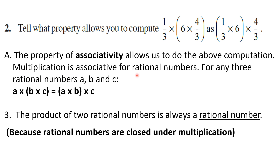Multiplication is associative for rational numbers. For any 3 rational numbers a, b and c, a into (b into c) is equal to (a into b) into c. It means while multiplying any 3 rational numbers, you can choose any 2 rational numbers first, multiply them, and then multiply the product with the third number. It doesn't matter whether you multiply b and c first or a and b first.